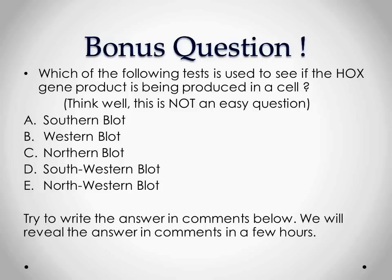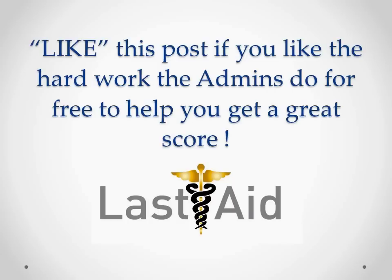Now for one more bonus question. If you know this, type it in the comments below — we'll be revealing the correct answer there. The question is: suppose we take this child and assay their cells to see if the HOX gene product is present or not — which blot would be used to detect if the HOX gene product is being produced? The options are: Southern blot, Western blot, Northern blot, Southwestern blot, and Northwestern blot. This is not an easy question, so it could be your credit point.